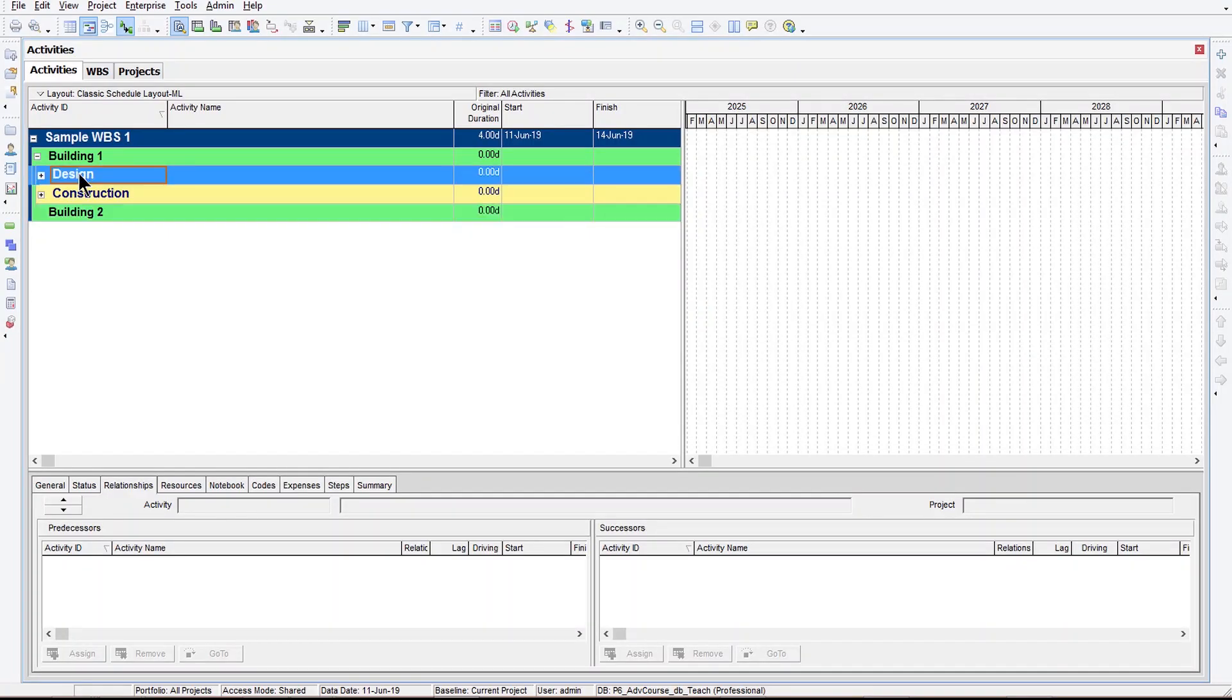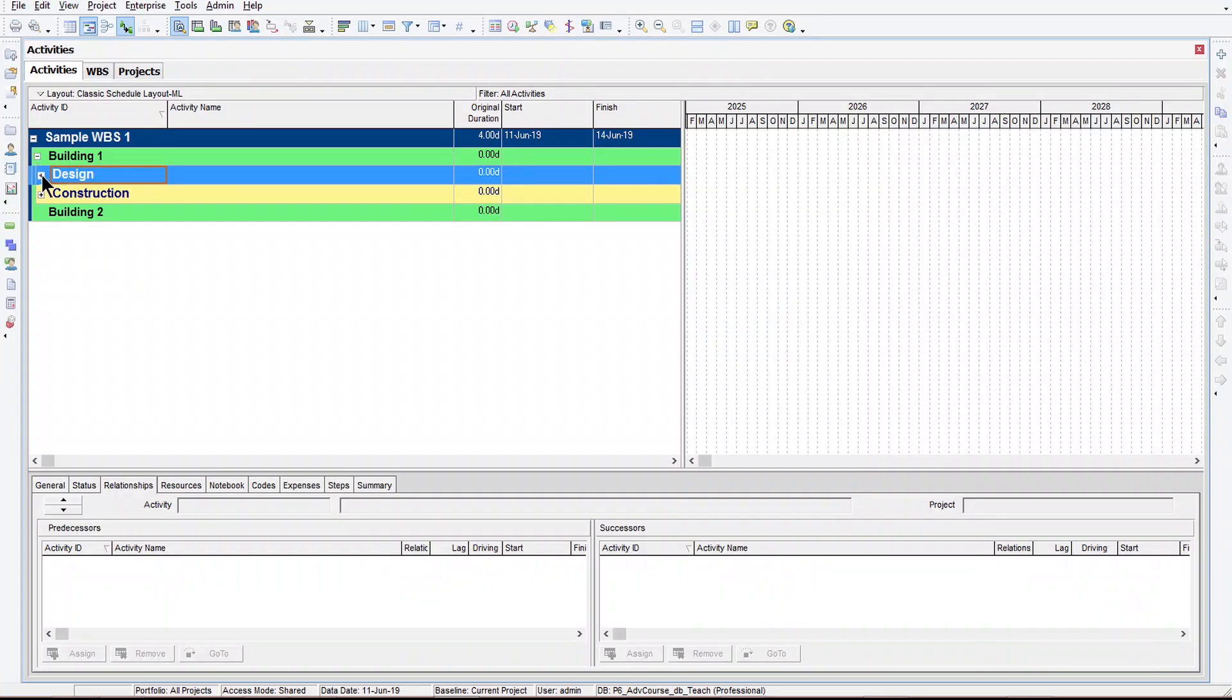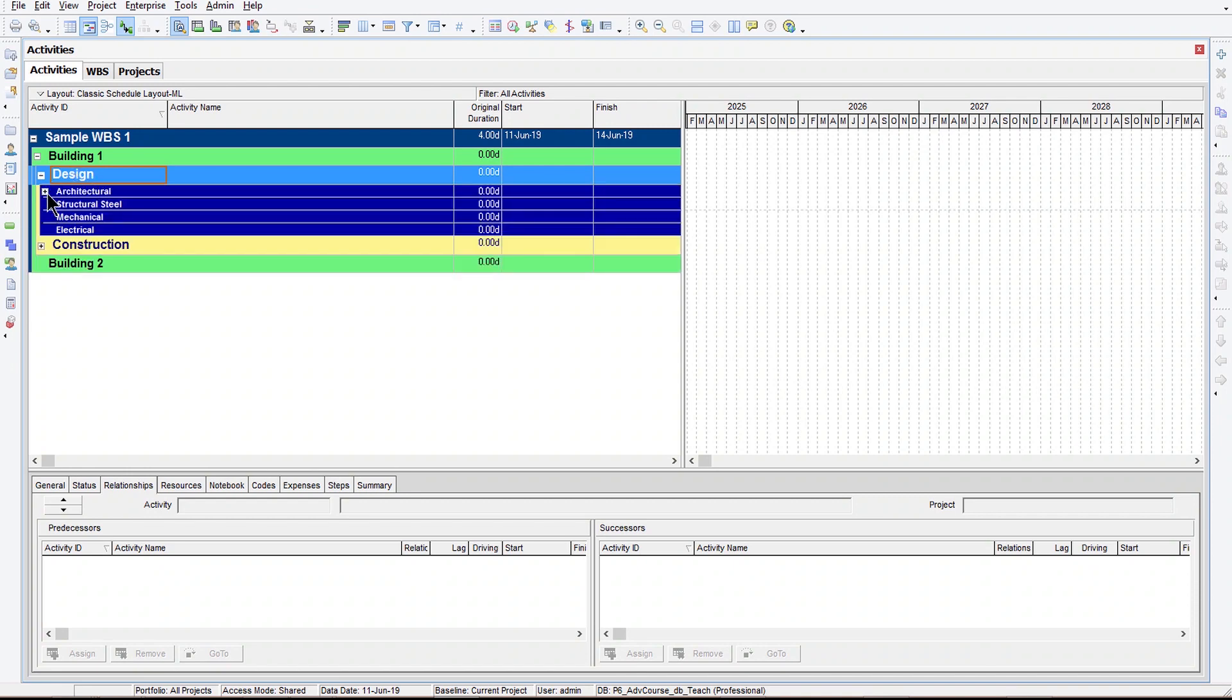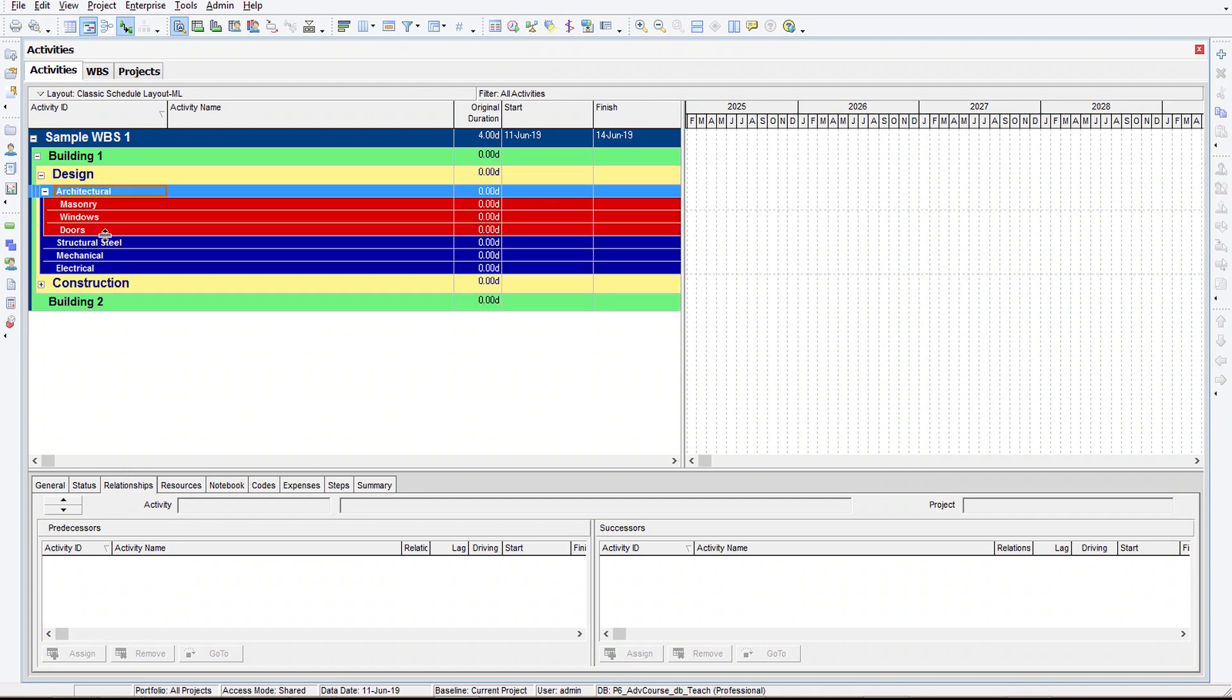And then underneath we're adding design and then construction. So we're breaking those two apart. We're putting all the design activities in one area. We're putting all the construction activities in another area. Now, if you have to break your design work down further because there's a lot of it in your project, then as you can see, we've broken our design work into the different components. Again, architectural structural steel. So those are getting into sort of my big disciplines and then even smaller work packages underneath.